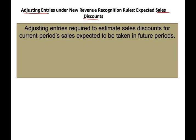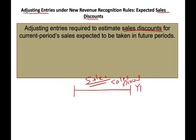Adjusting entries are required to estimate sales discount for the current sales period expected to be taken in a future period. The reason why they want you to estimate this is because of the matching principle. If this is year one and sales take place in year one, all related expenses or reductions in sales should take place in year one. Therefore, we have to estimate the sales discount associated with the sales, to make sure sales and the sales discount are recorded in the same period — the matching principle.